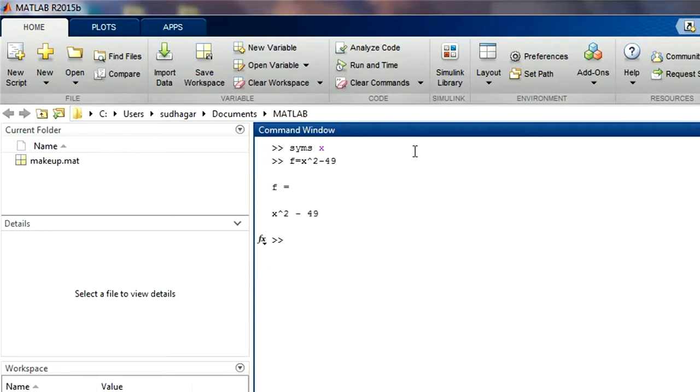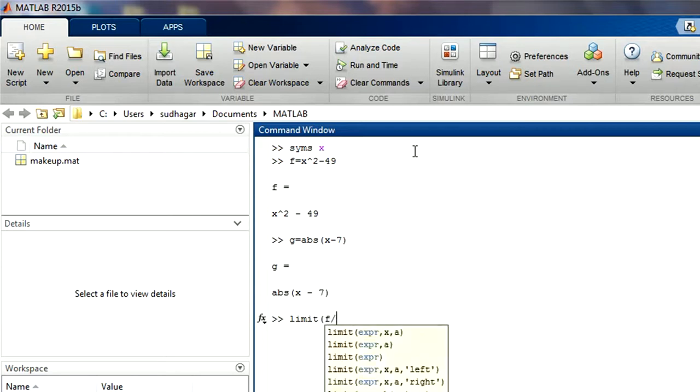Now we introduce the symbols. f equal to x² minus 49, and g equal to absolute value of x. So it is abs means absolute value. Now let us calculate the limit. Limit is f divided g, variable is x, the limit is 7. Plus means you give right. So the answer is 14.